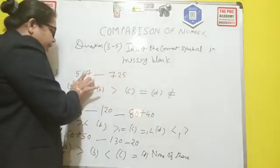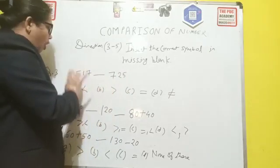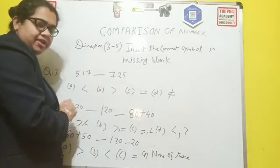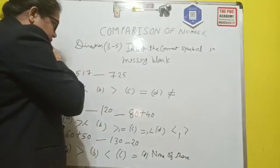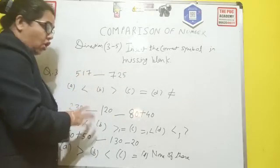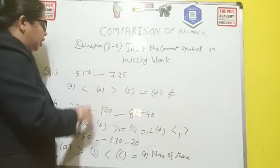So 5, 1, 7 is bigger than 7, 25 or it is less than 7, 25. So tell me the children answer. 5, 1, 7 is bigger or less or equal or not equal.